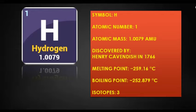The melting point of hydrogen is -259.16°C and the boiling point of hydrogen is -252.879°C. Hydrogen has 3 isotopes.